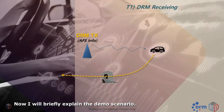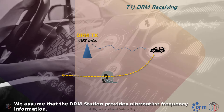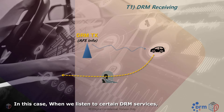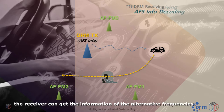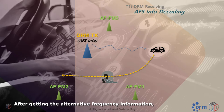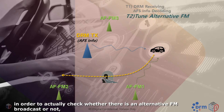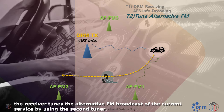Now, I will briefly explain the demo scenario. We assume that the DRM station provides alternative frequency information. In this case, when we listen to certain DRM services, the receiver can get the information of the alternative frequency. After getting the alternative frequency information, in order to actually check whether there is alternative FM broadcast or not, the receiver tunes the alternative frequency FM broadcast of the current service by using the second tuner.